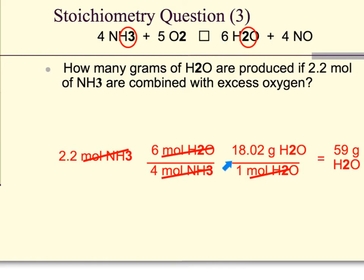We multiply that times the weight of water from the periodic table. Two hydrogens each weighs 1, one oxygen that weighs 16. 2 plus 16 gives us 18 over 1 mole of water. If we cancel out our units, we would have an answer of 59 grams of water.